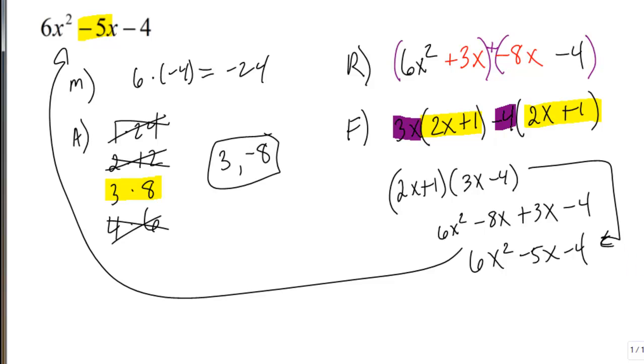So this is the factored form, and that's what you'd consider the answer in this case. You're just factoring that into two binomials.